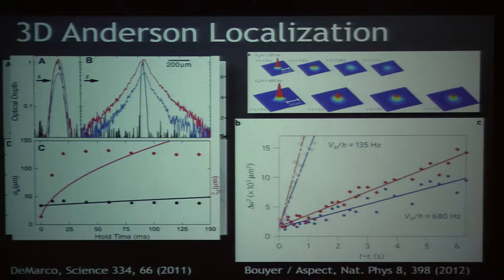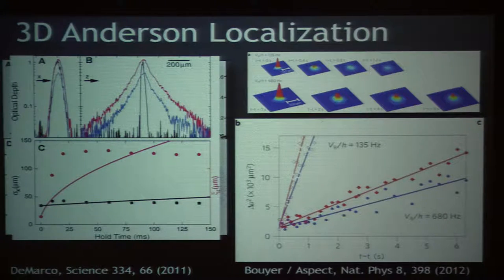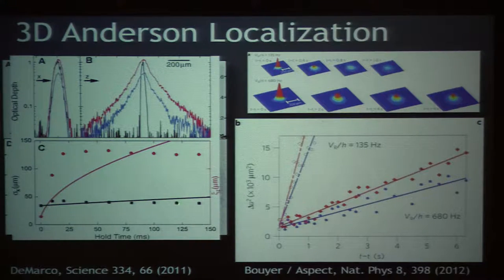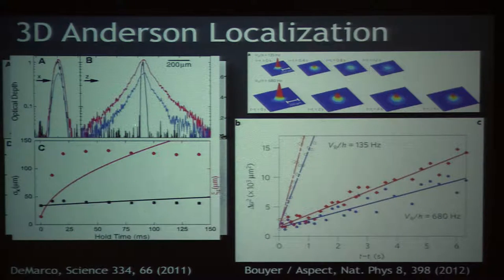So this is what we saw too — just looking at that localized component. What we see is it kind of expands, it diffuses out, and then it gets stuck. These curves are what you calculate for classical diffusion, and here you can see over some period of time this gets stuck. We were able to eventually follow this out to a second. We also saw the gas adopt, along one direction, a very exponential-looking profile.